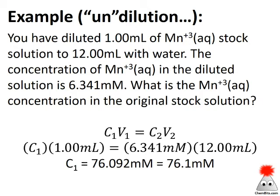We've got to pick some things out. I've got one milliliter of stock, so that's one milliliter of some unknown concentration, that's what I'm looking for, equals 12 milliliters of 6.341 millimolar stock. Solve that for C1 and our units cancel. We end up with 76.1 millimolar, rounding off to the three sig figs that we're limited to by this 1.00 milliliters.